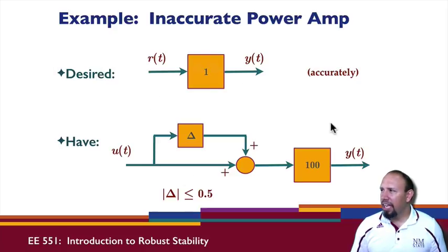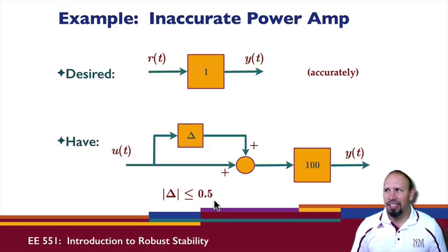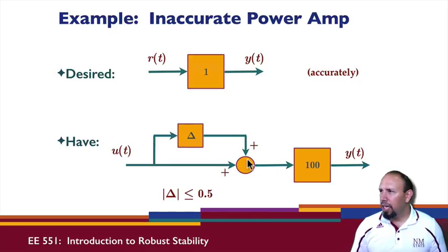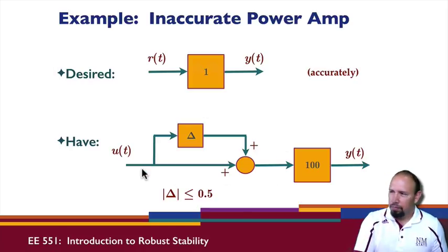This is what we desire, but this is what we actually have. It has high gain and uncertainty. The uncertainty is plus or minus 50%, meaning the gain quantity could be 1.5 or 0.5 — anywhere from 0.5 to 1.5. So that's a pretty significant variation.